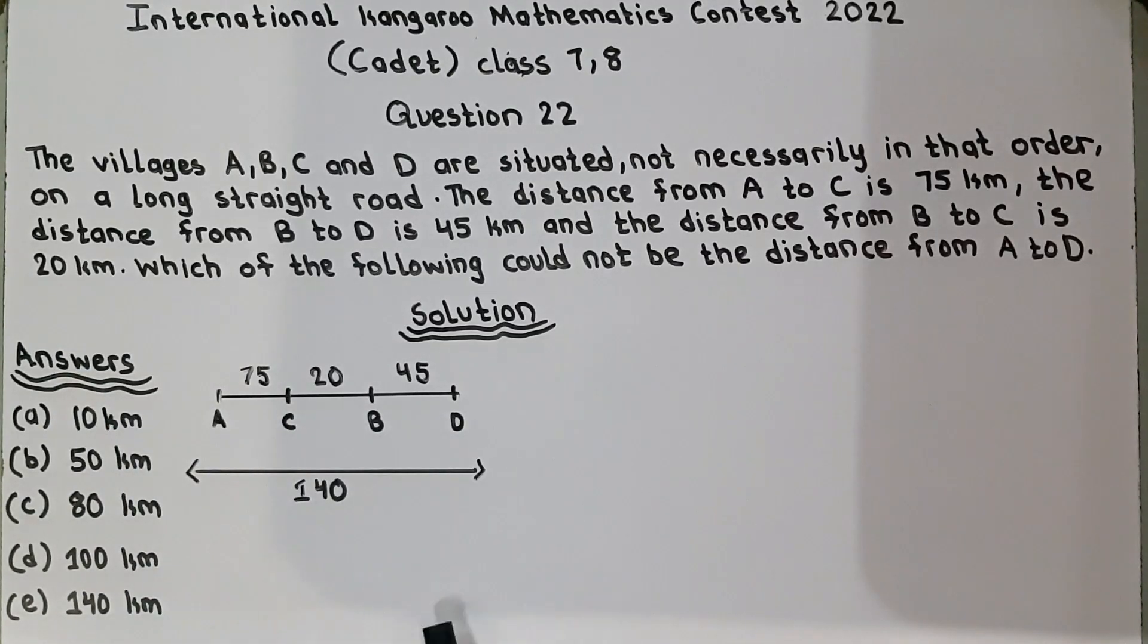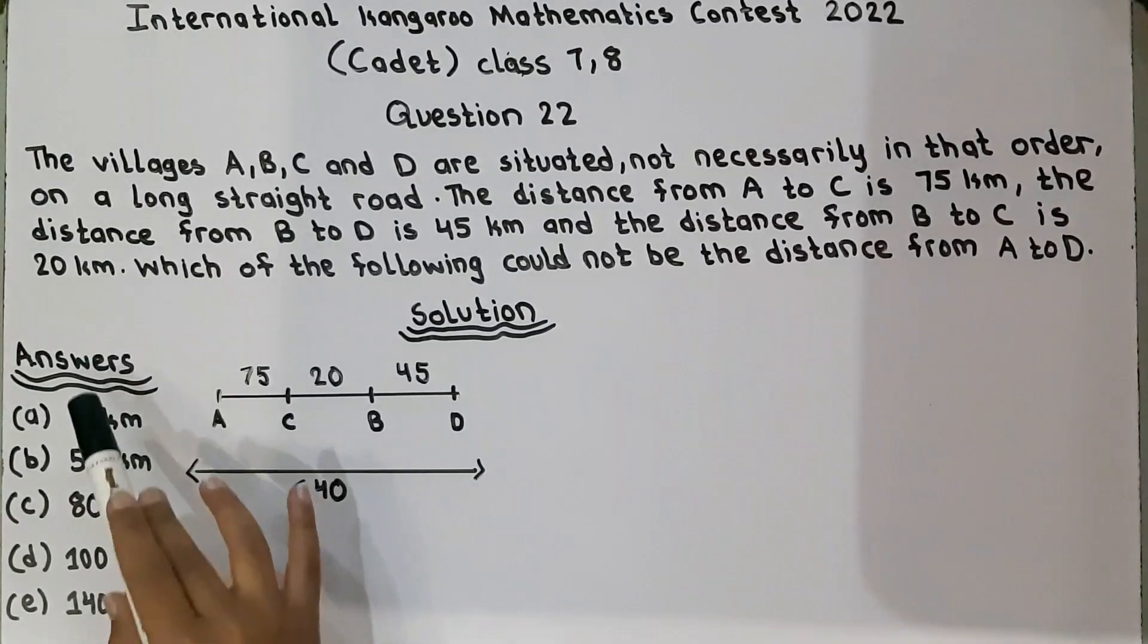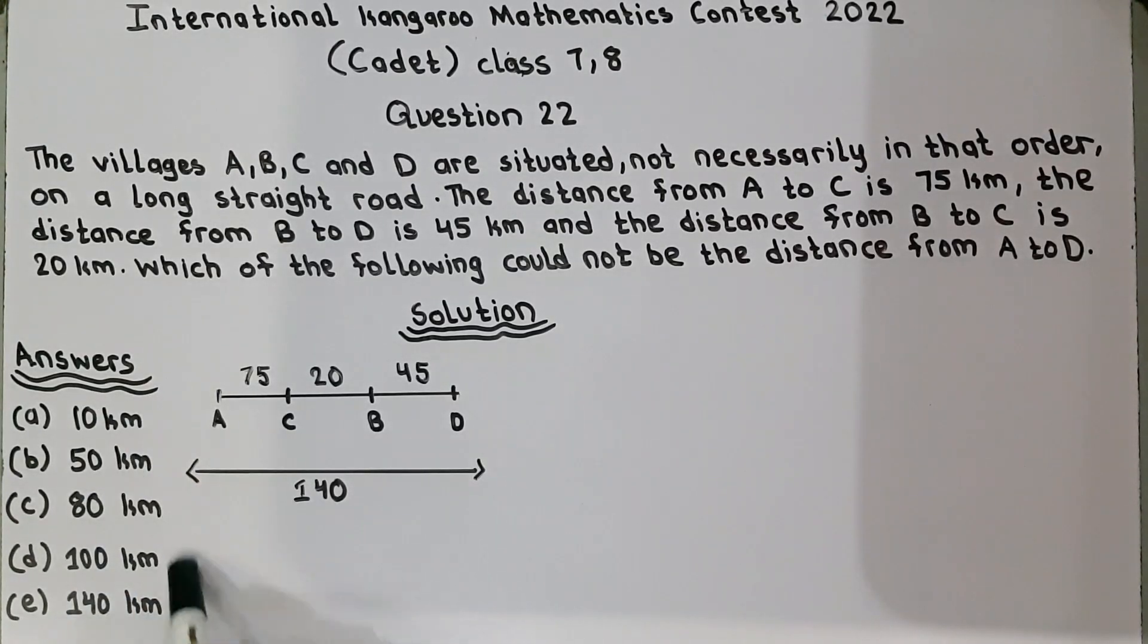Look. And total is 140. 75 plus 20 plus 45 is equal to 140. So, now we have to find which of the following could not be the distance from A to D. These are the answers and which one of these could not be the distance from A to D.